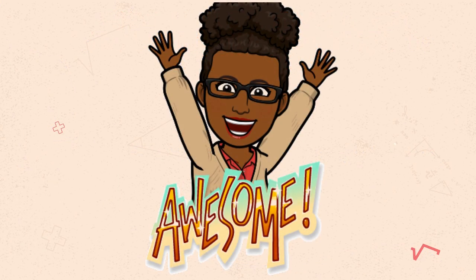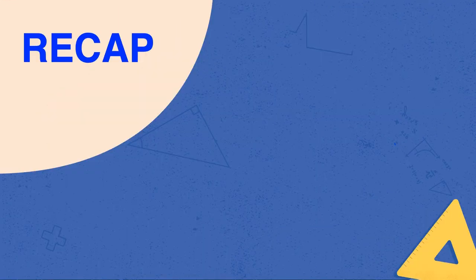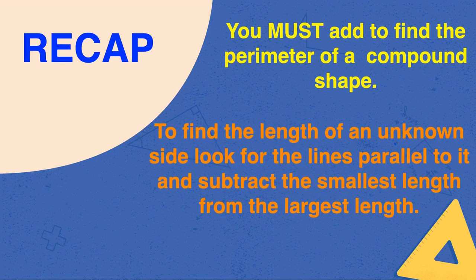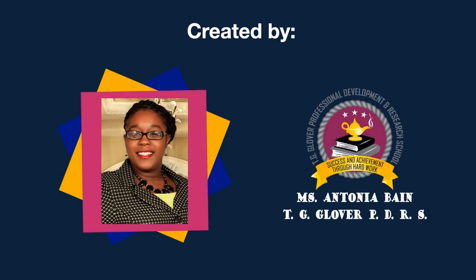I'm super proud of you. Let's do a quick review. We learned quite a number of things today. We learned that you must add to find the perimeter of a compound shape. We also learned that to find the length of an unknown side, look for the lines parallel to it and subtract the smallest side from the largest side. And of course, we cannot forget that we must use units of length to measure perimeter. You did awesome today, guys. This lesson was created by Miss Antonia Vane. Thank you.